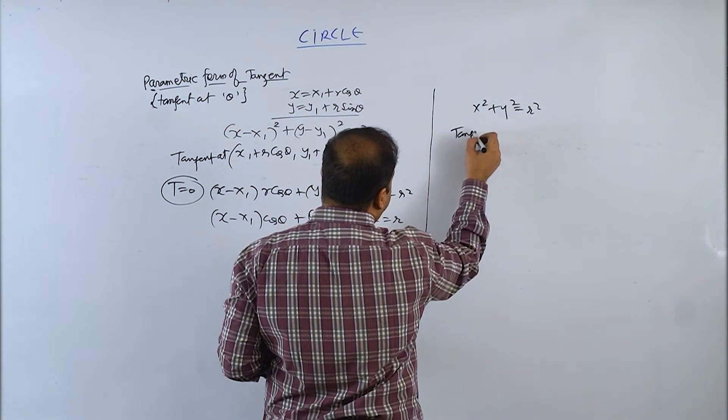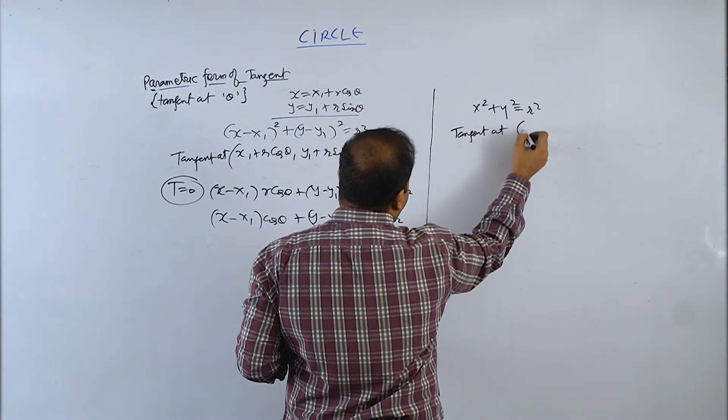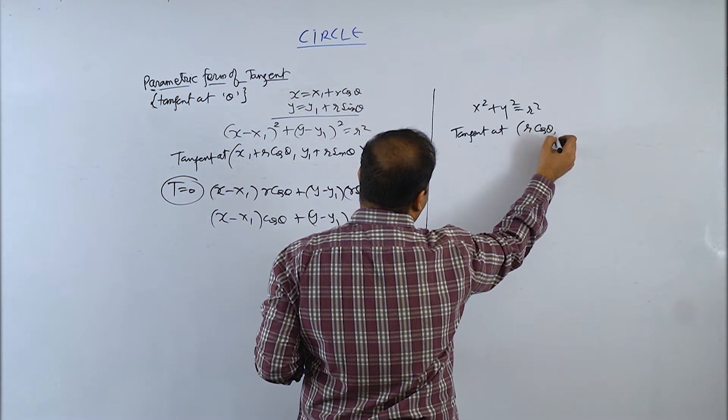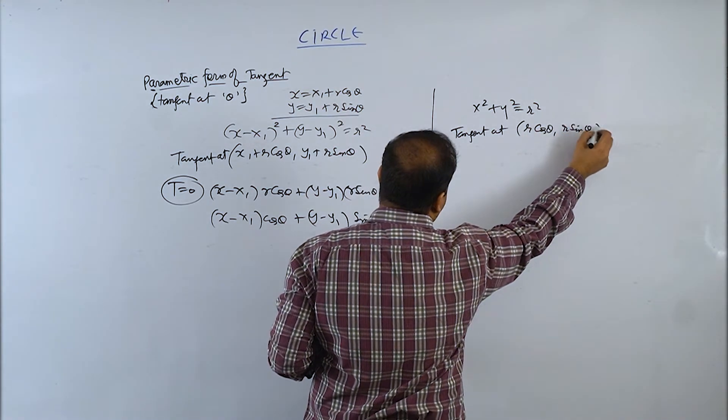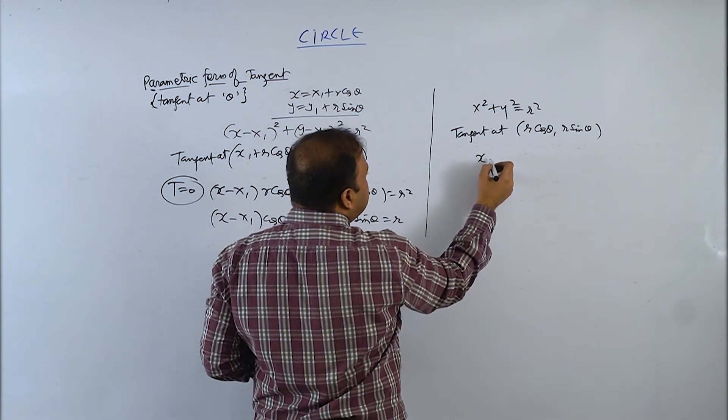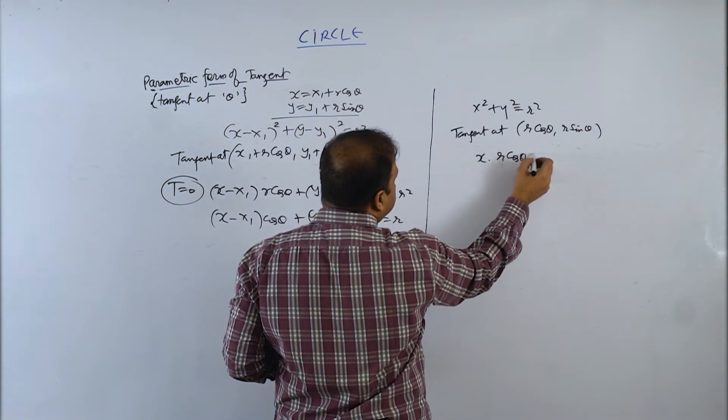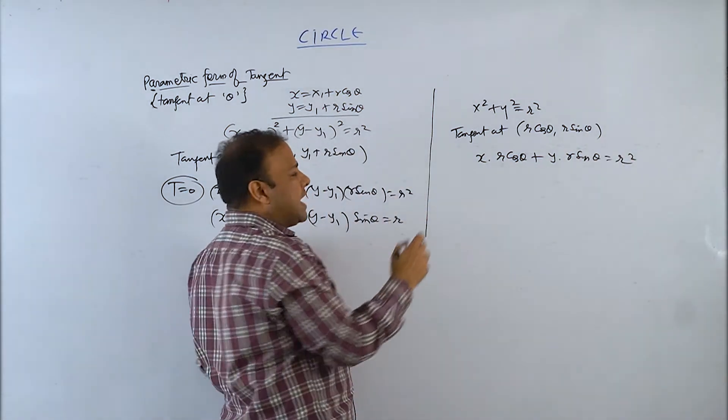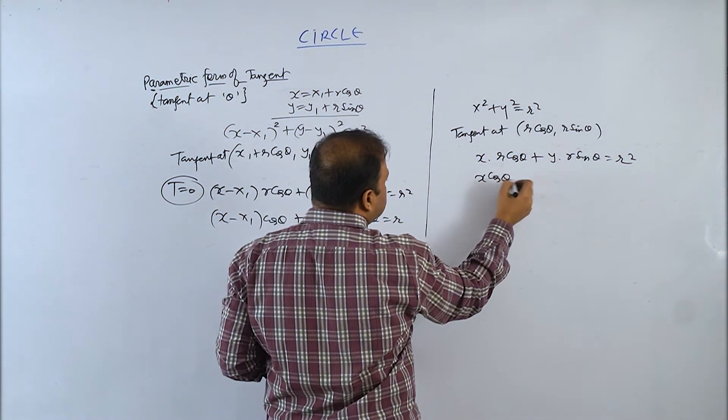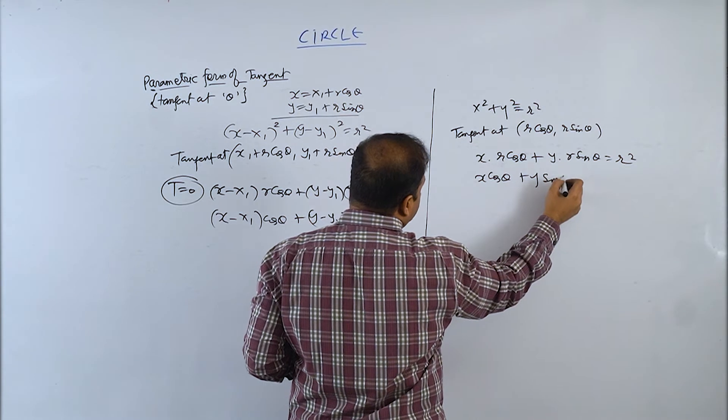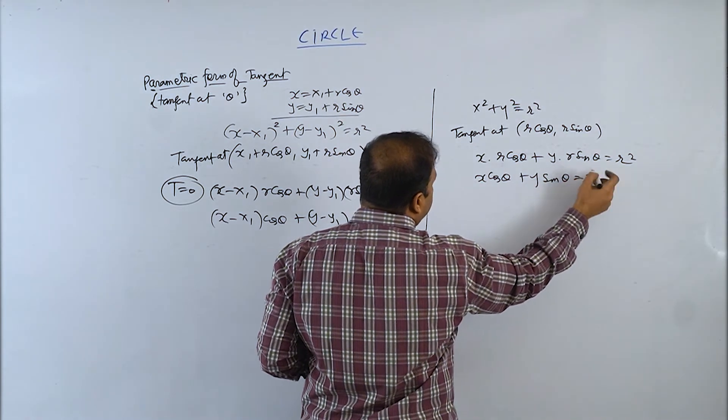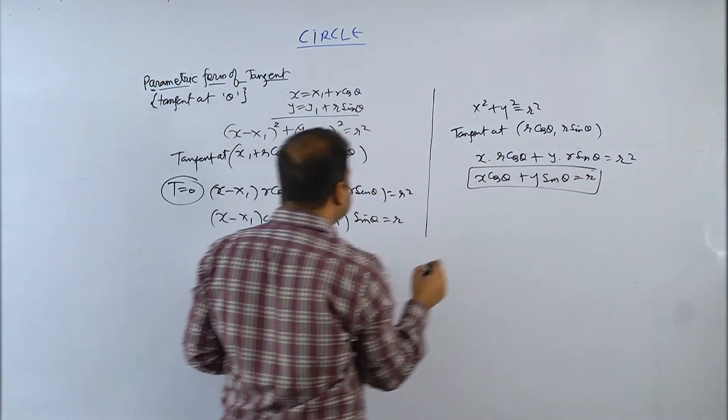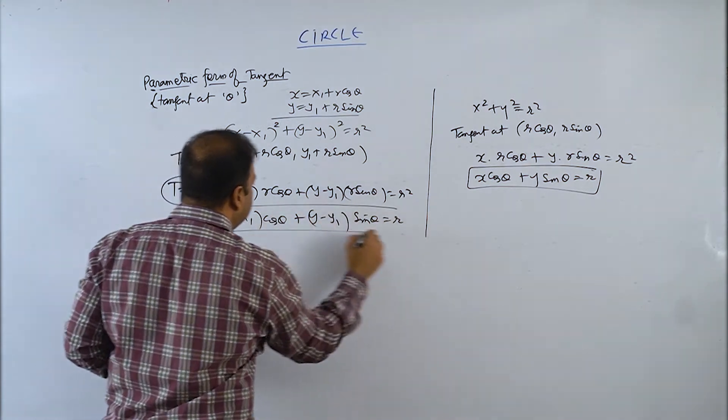Standard form of circle, tangent at it will be zero plus r cos theta, zero plus r sin theta. And that gives me x square is x x1 and y square is y y1. If we cancel r, I will get x cos theta plus y sin theta equals r. And this is called parametric form of tangent.